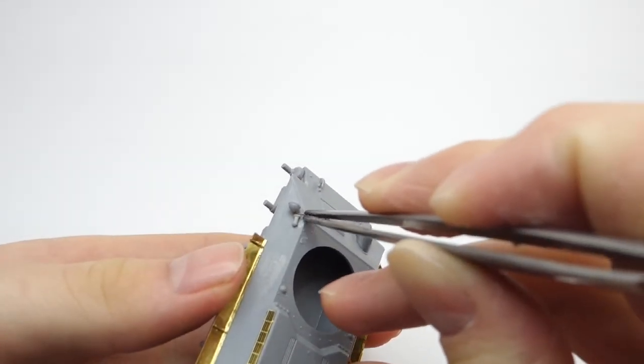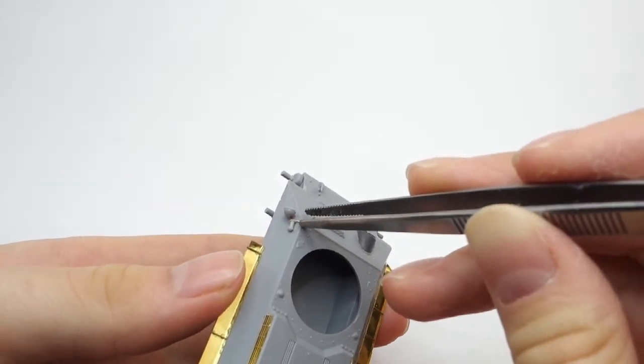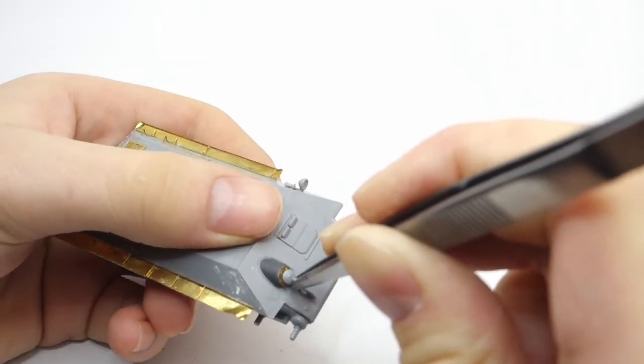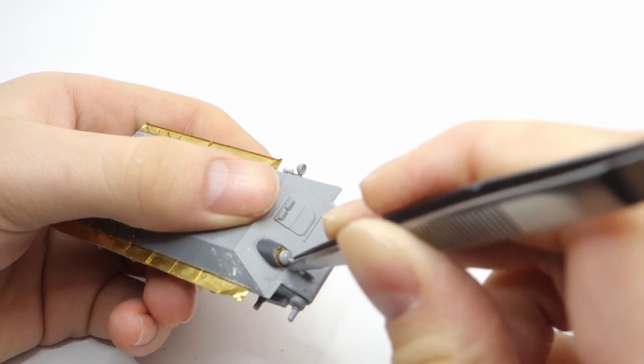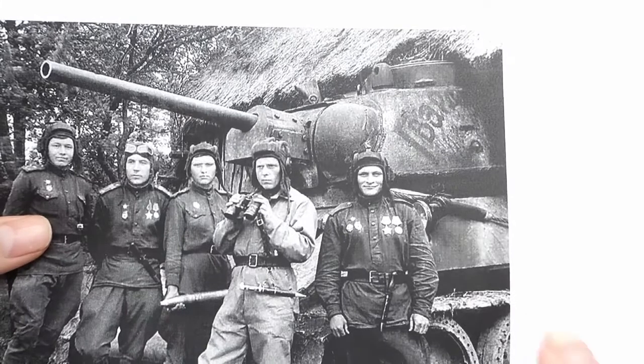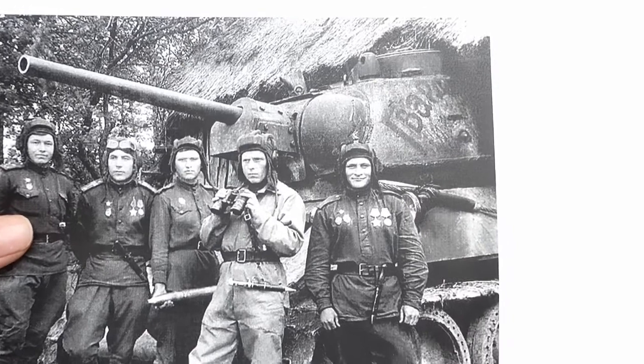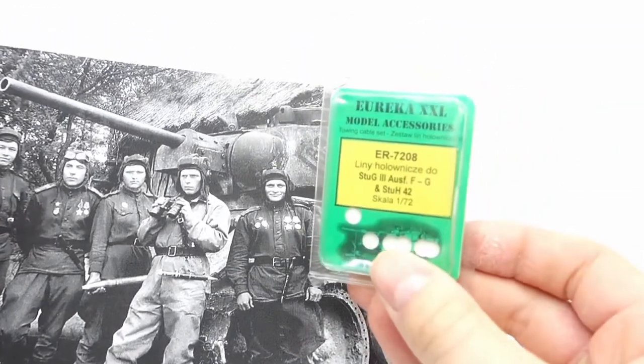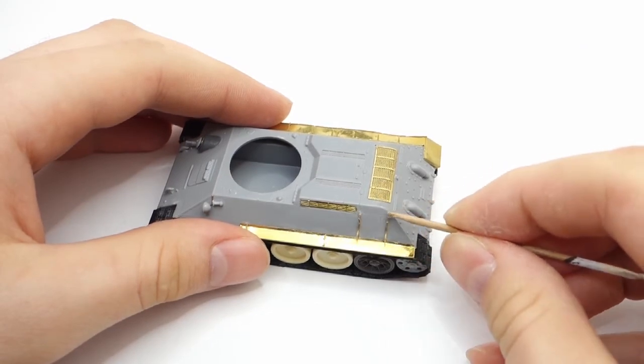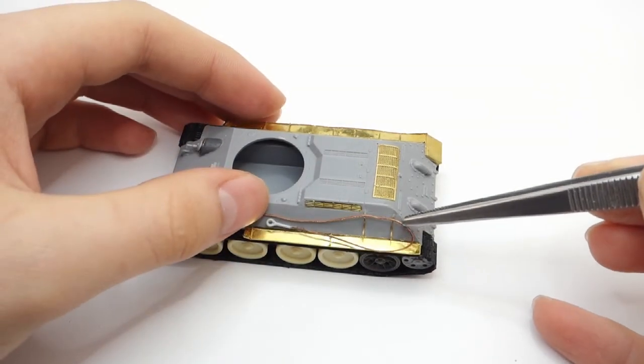Another small detail that can be added using copper wire is this electric cable for the headlight. On the reference photo showing this vehicle we can see a towing line attached to the side. This is not a typical T-34 towing line, but rather something like Sturmgeschütz used to have. For this purpose I'm using a Sturmgeschütz 3 towing line from Eureka XXL, which is an excellent product.